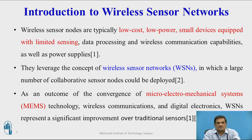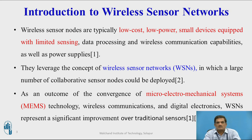Wireless sensor networks consist of wireless sensor nodes, usually called smart devices. These wireless sensor nodes are typically low-cost, low-power, small devices equipped with limited sensing, data processing, and wireless communication capabilities, as well as a power supply capability. They leverage the concept of wireless networks in which a large number of collaborative sensor nodes could be deployed across a hostile area. As an outcome of the convergence of micro-electronic mechanical systems (MEMS) technology, wireless communications, and digital electronics, wireless sensor networks represent a significant improvement over traditional sensors.